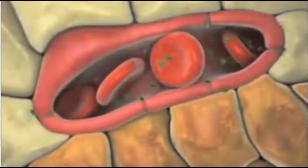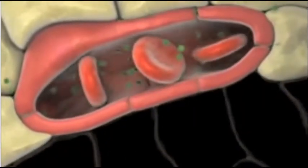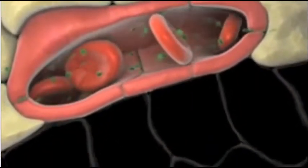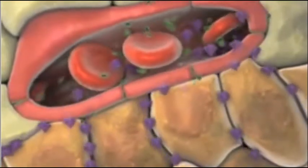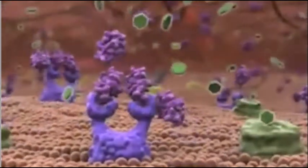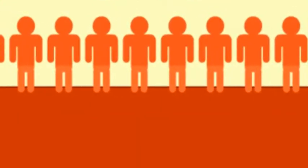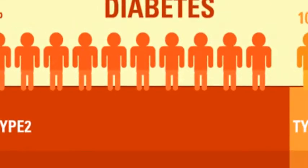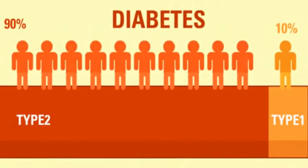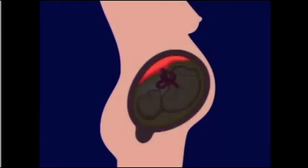Diabetes is of three main types: insulin-dependent diabetes, or Type 1 diabetes; non-insulin dependent diabetes, or Type 2 diabetes; and gestational diabetes mellitus. A person's eating habits and viruses can cause Type 1 diabetes. Heredity, obesity, high blood pressure, and lack of proper diet cause Type 2 diabetes, which is very common.